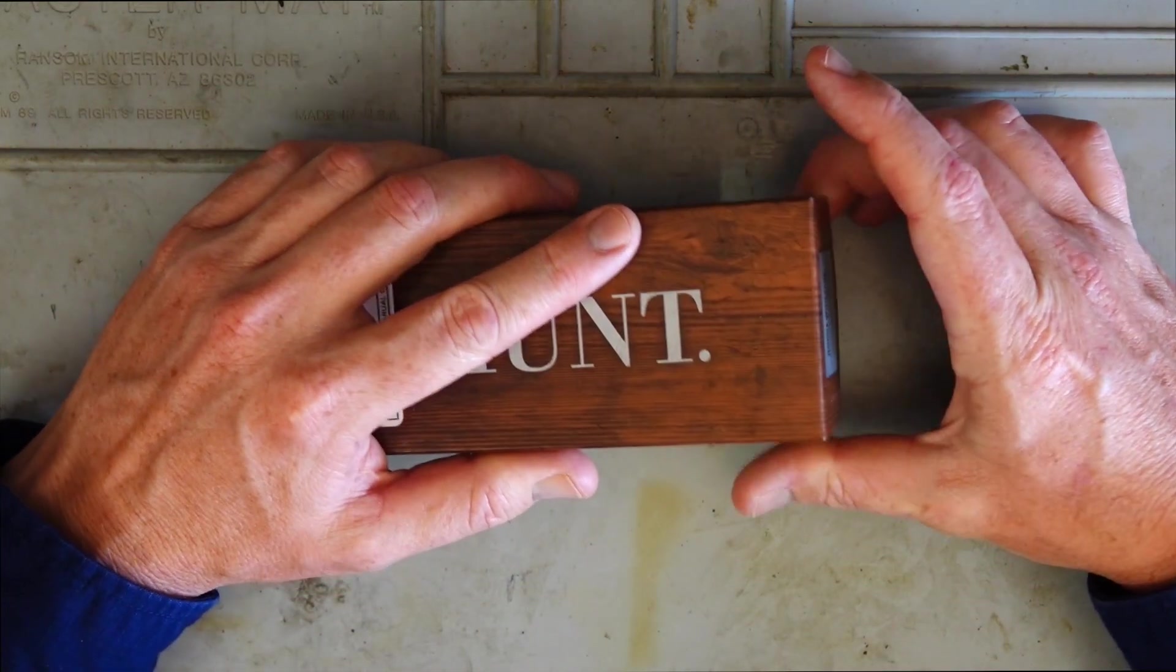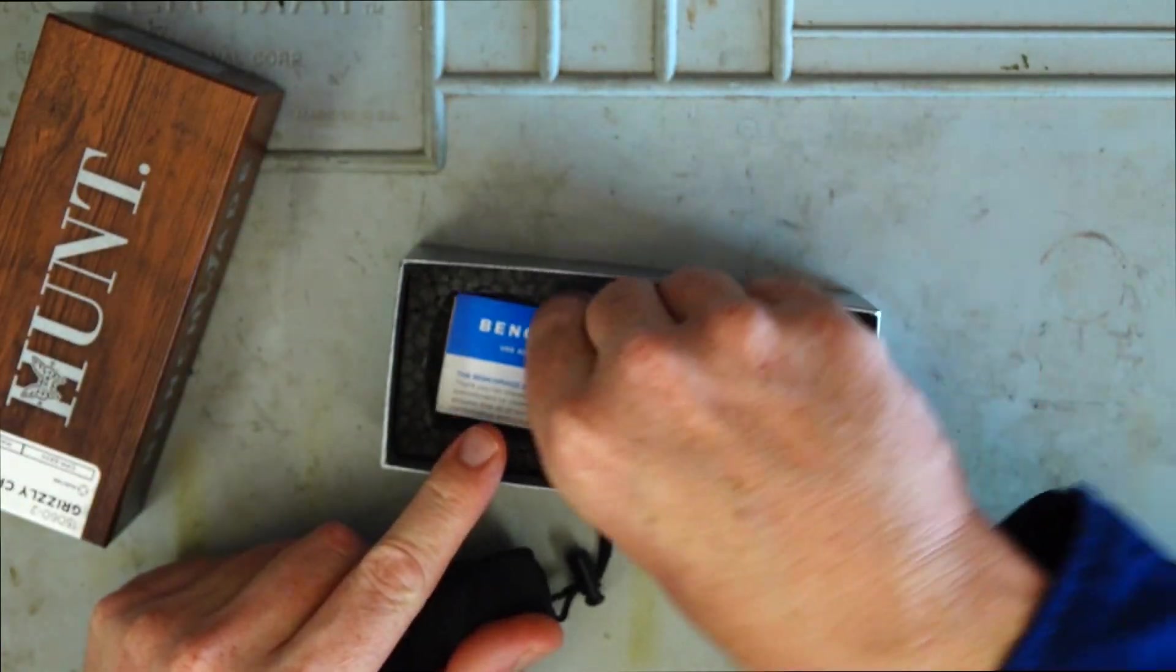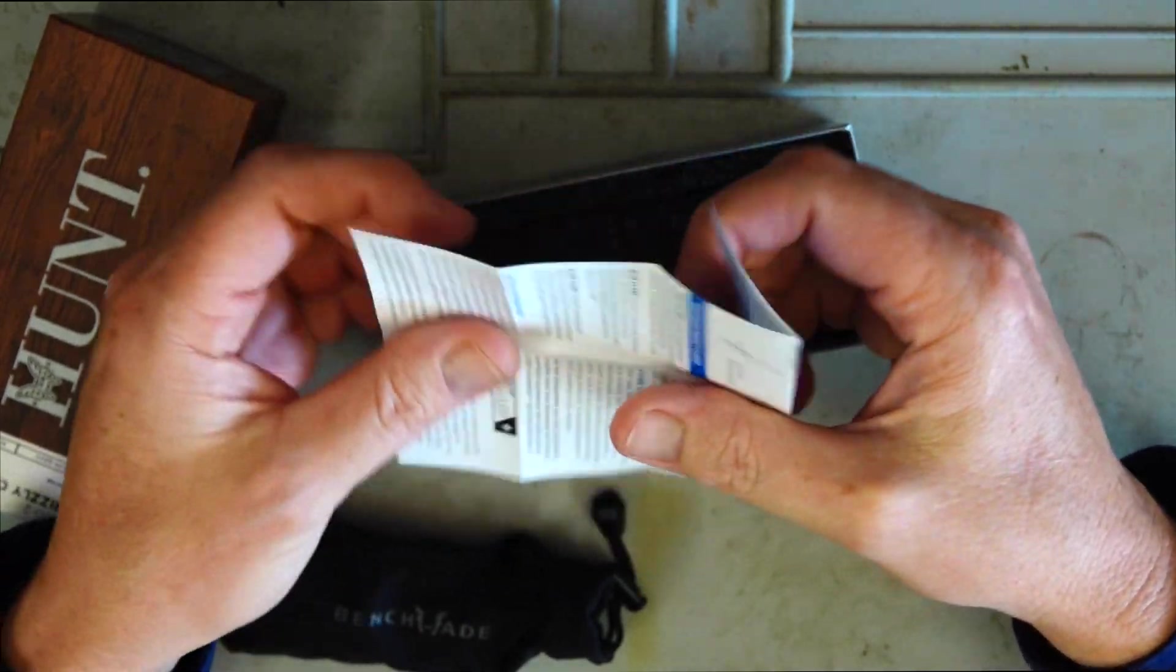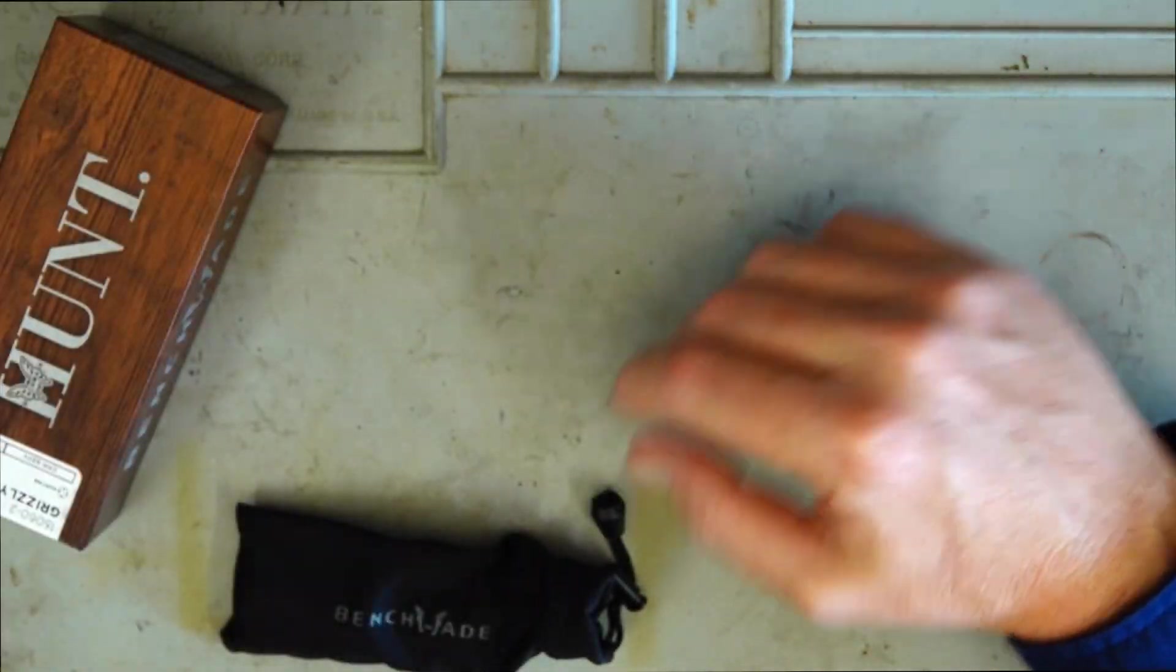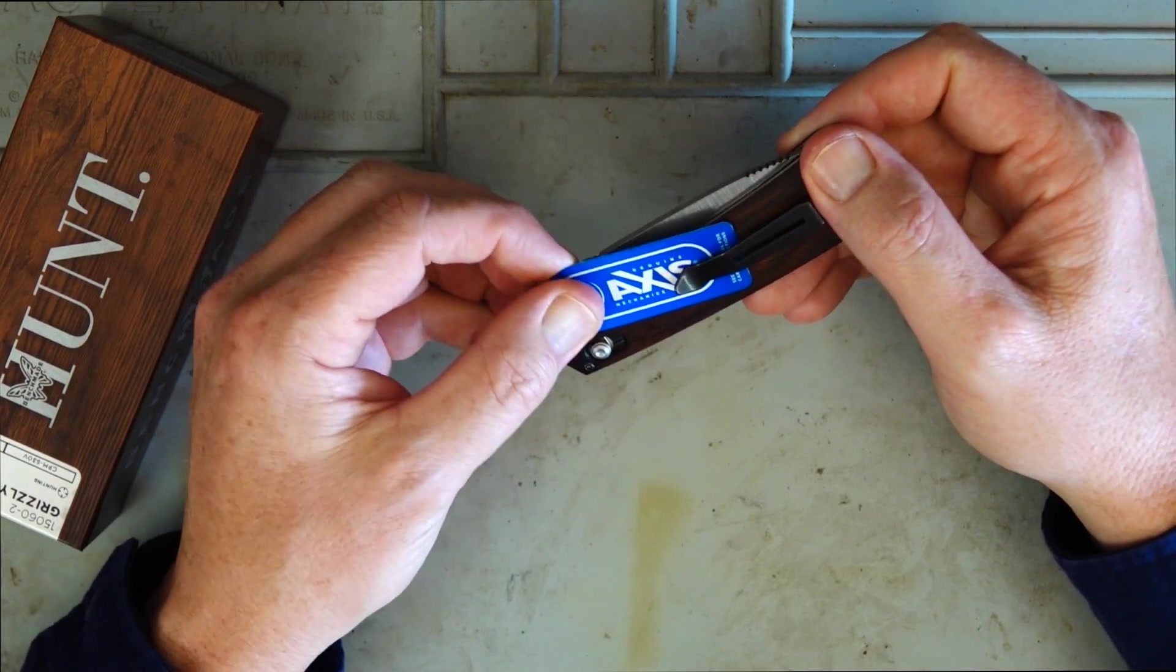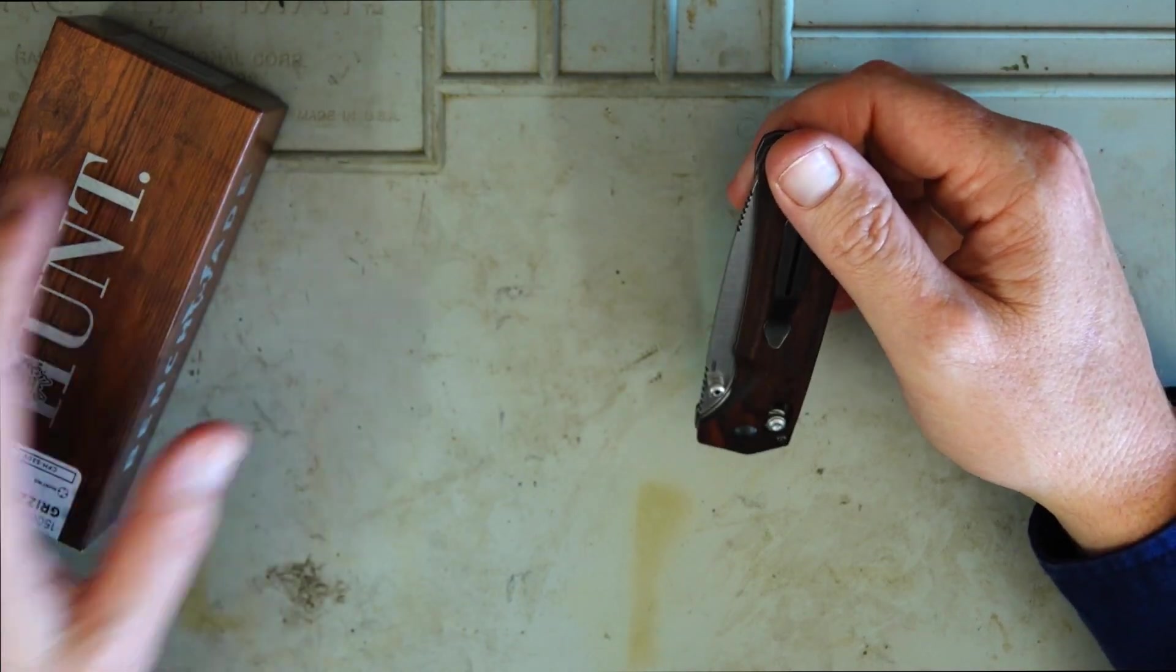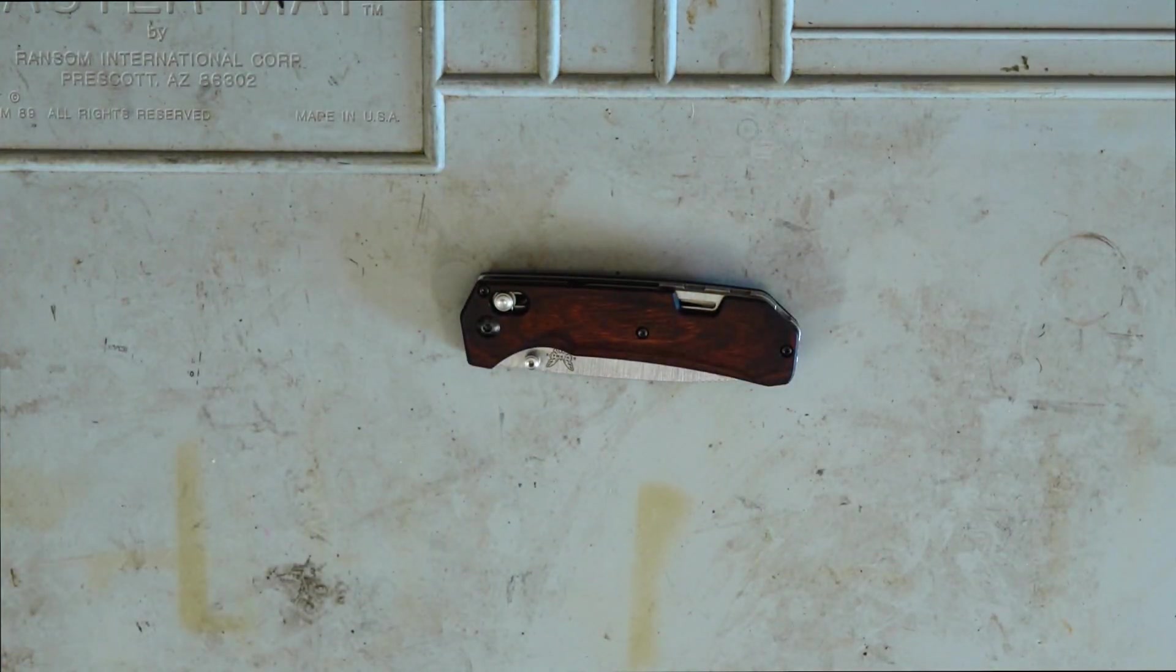Now this is how it comes in the box. Just got some promotional material from Benchmade. Comes in a Benchmade pouch. A little bit of information there on the axis lock. And then obviously the knife itself.